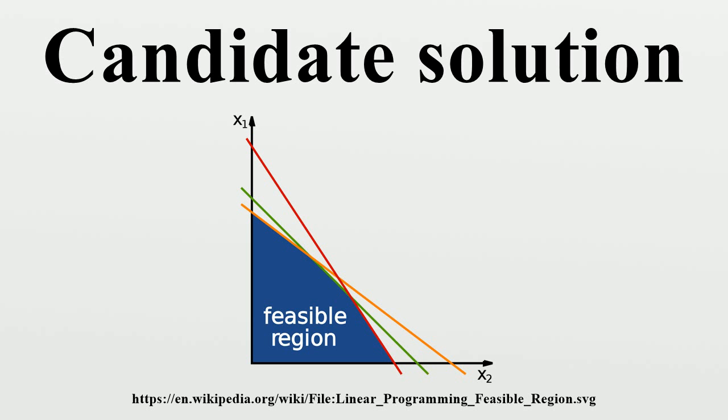In calculus, an optimal solution is sought using the first derivative test. The first derivative of the function being optimized is equated to zero.